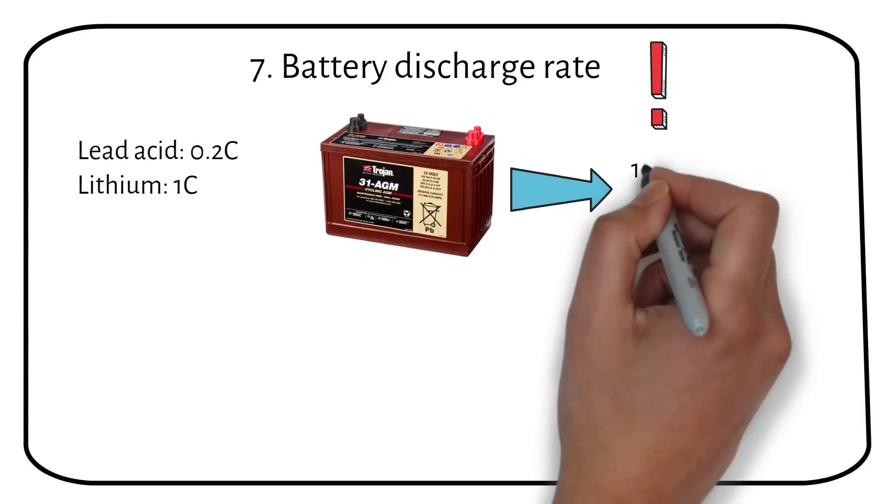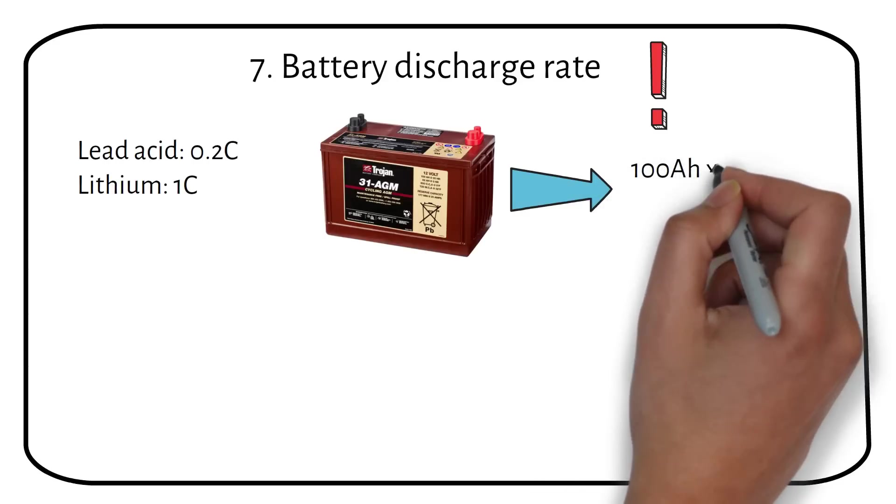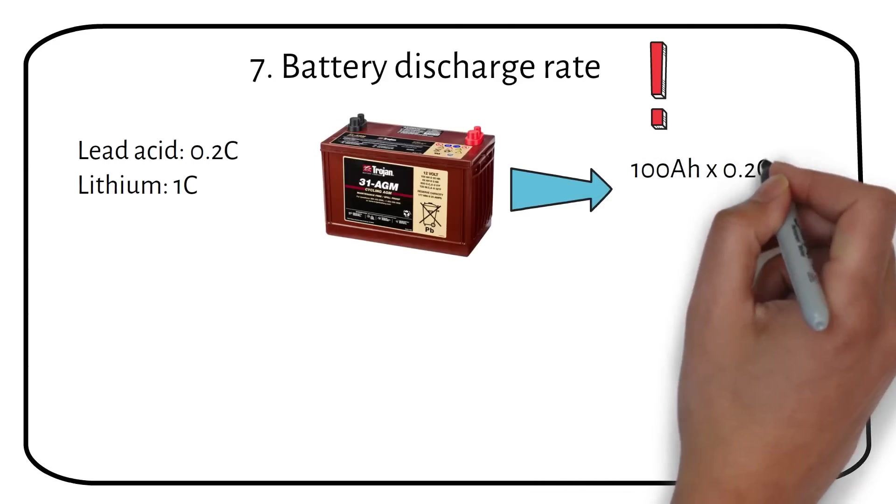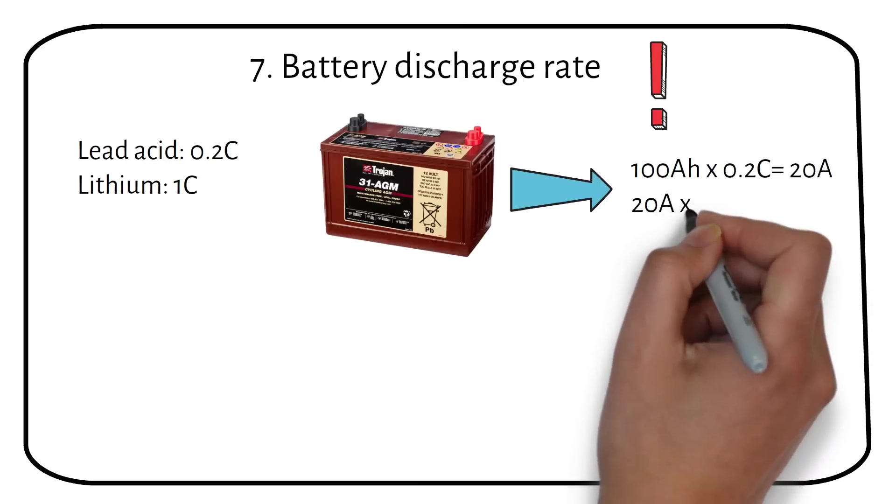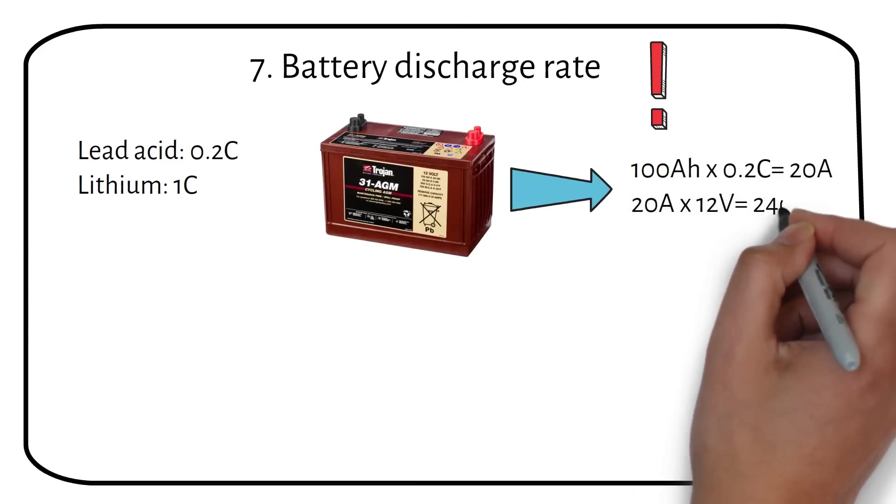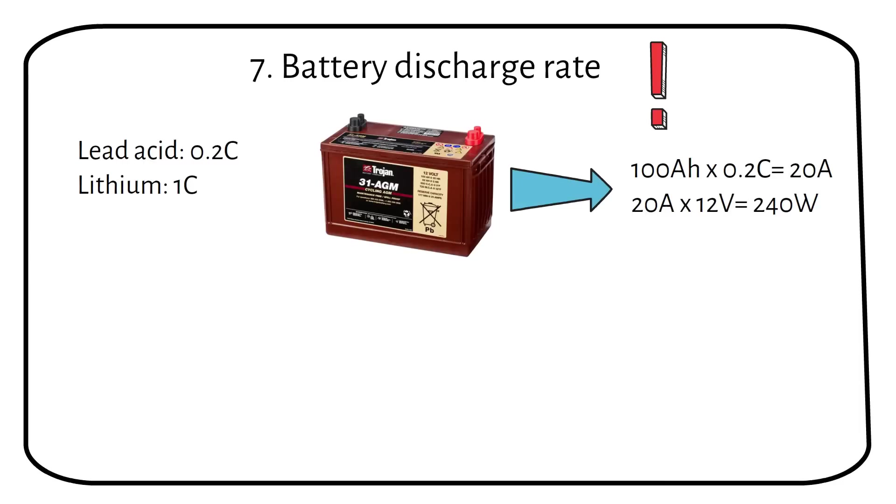For lead-acid batteries, a 12V 100Ah battery has a maximum discharge rate of 20A. Multiplying by the battery voltage, we get a maximum power draw of 240W. Connecting a 1000W inverter to a single 12V 100Ah lead-acid battery would significantly reduce the battery's lifespan as it exceeds the maximum discharge rate.